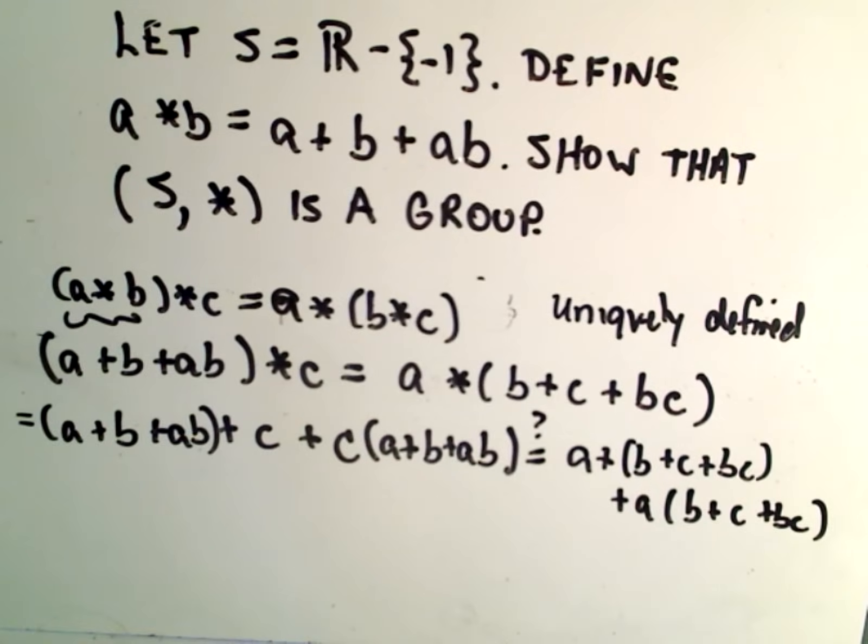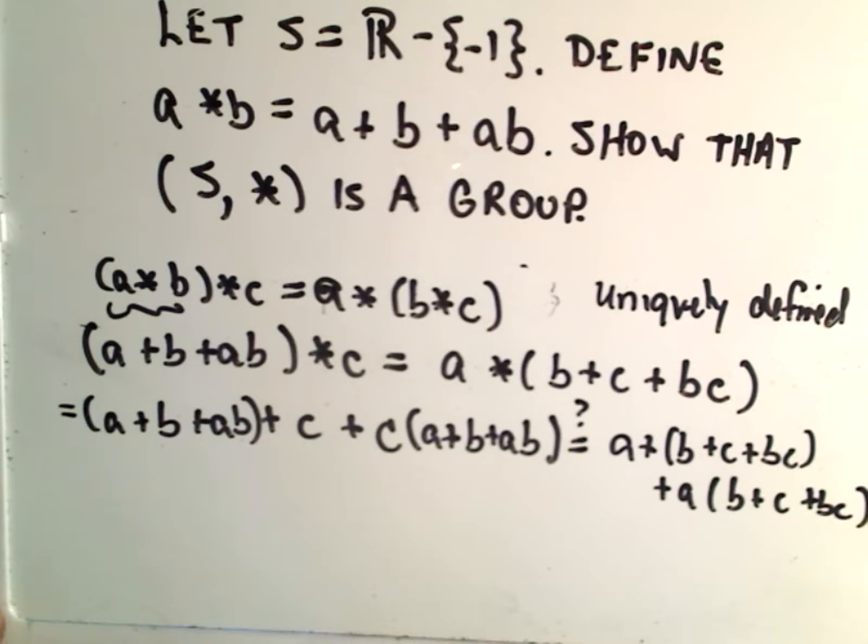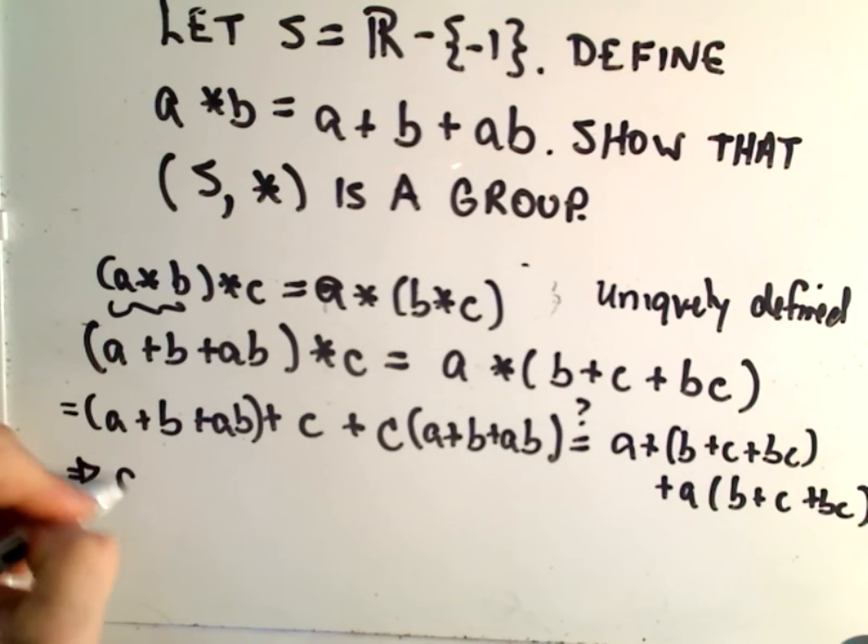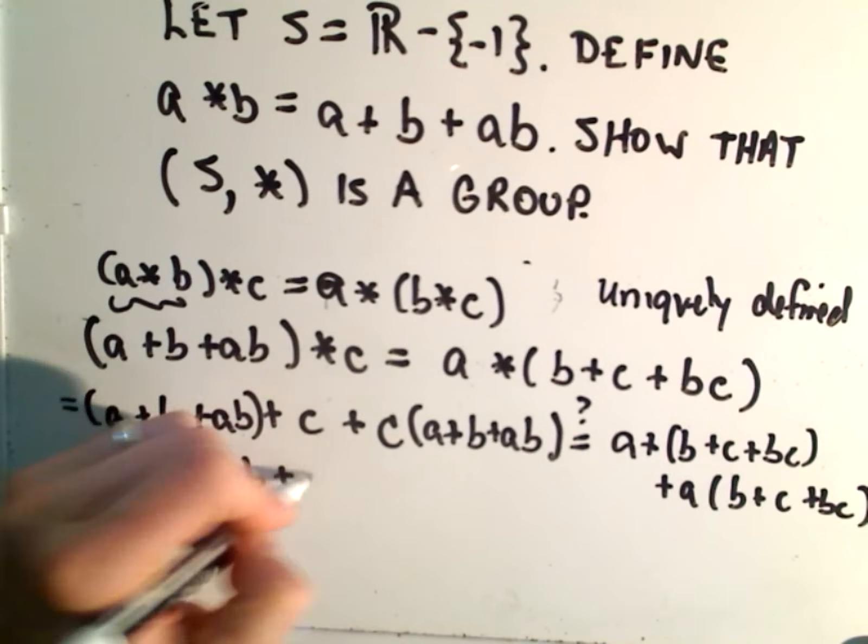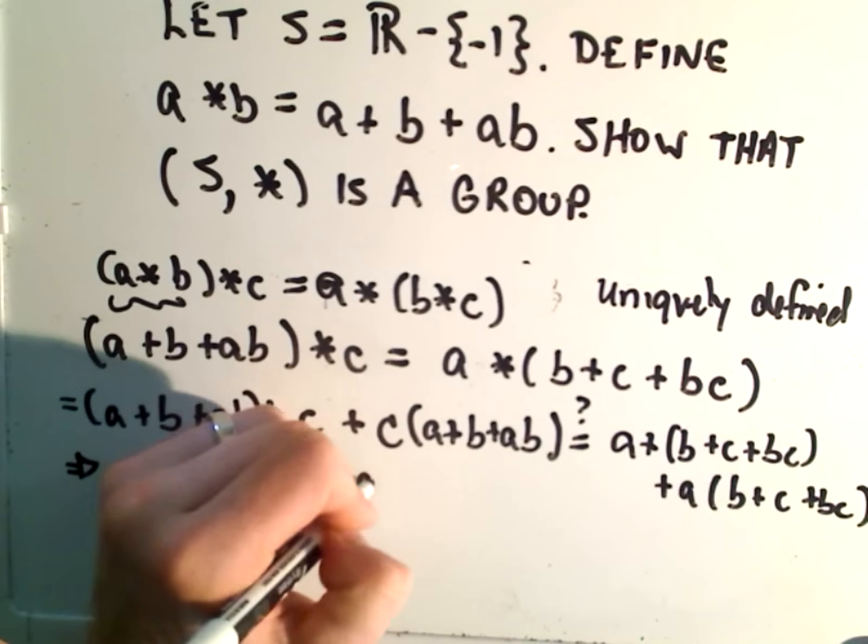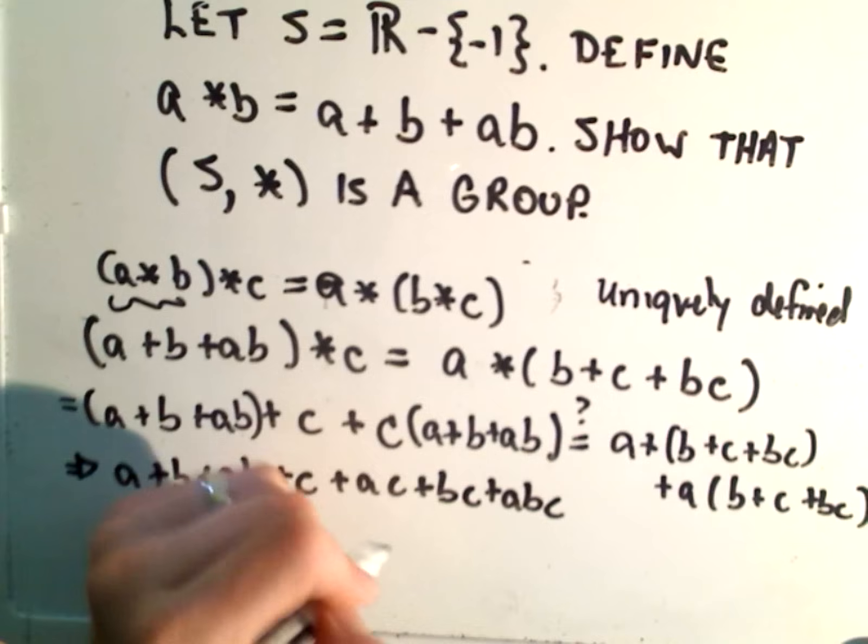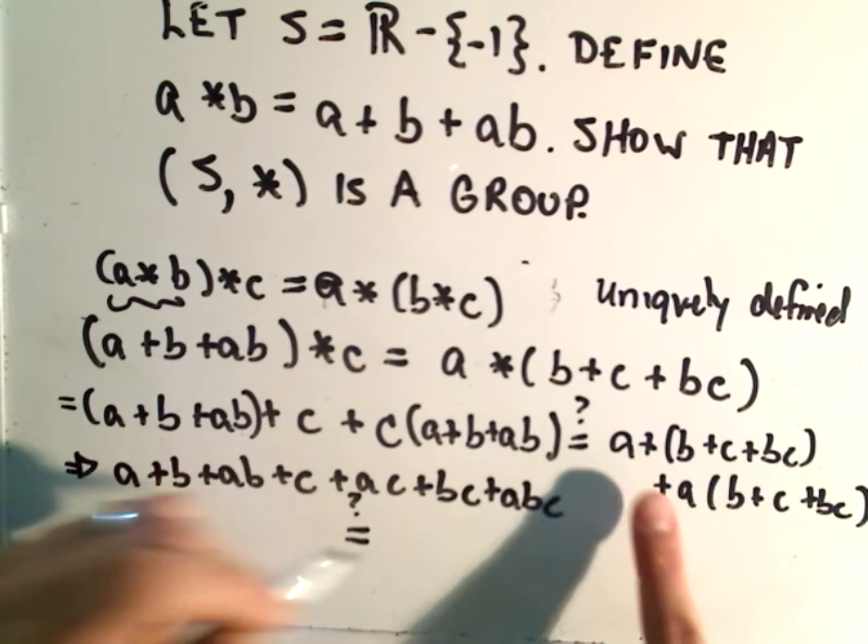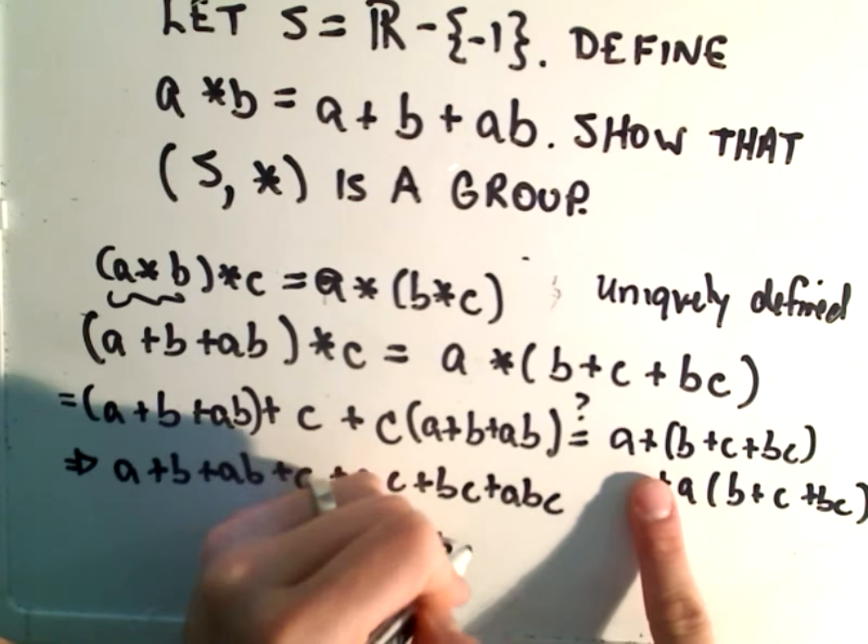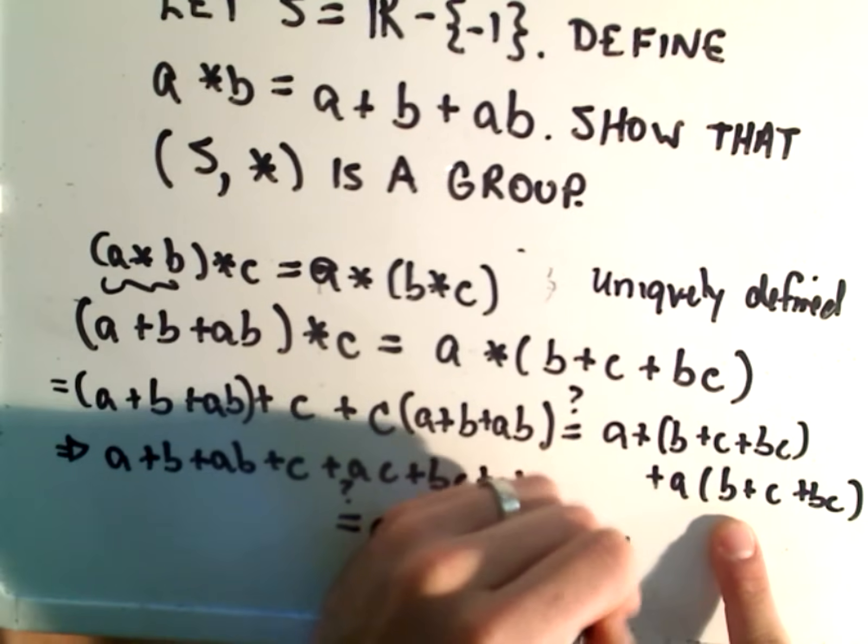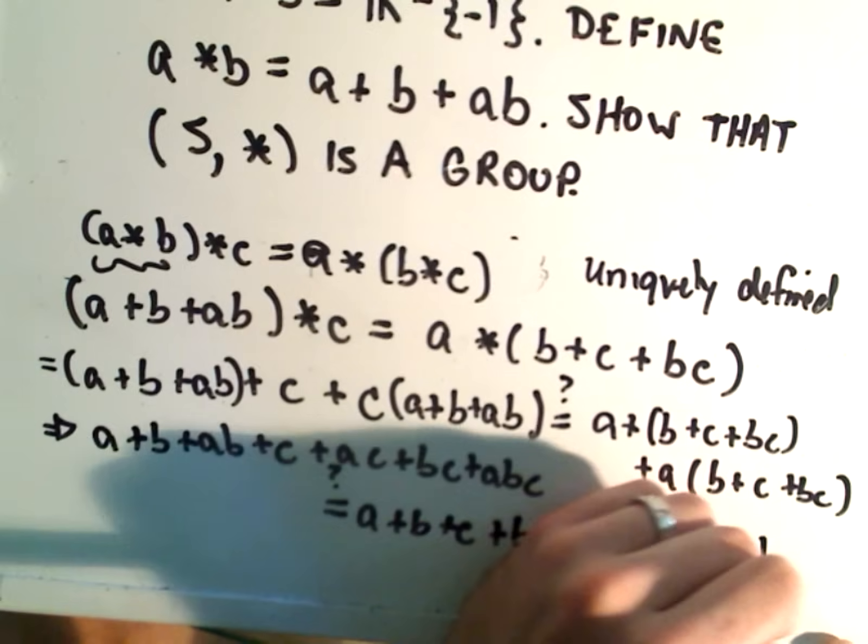So, are these equal for it to be associative? If you multiply it out on the left, we'll get A plus B plus AB plus C plus AC plus BC plus ABC. On the right side,